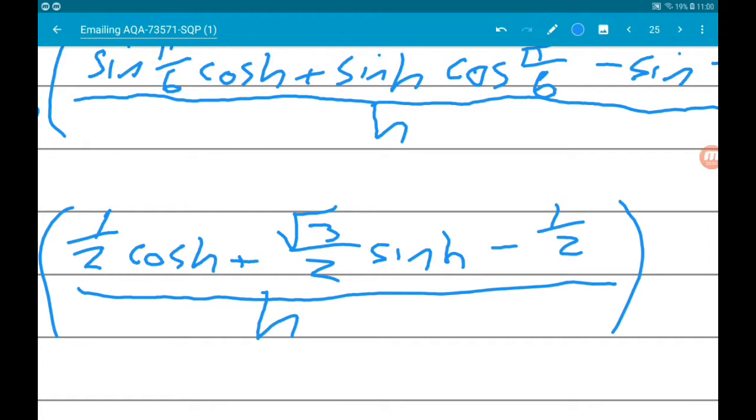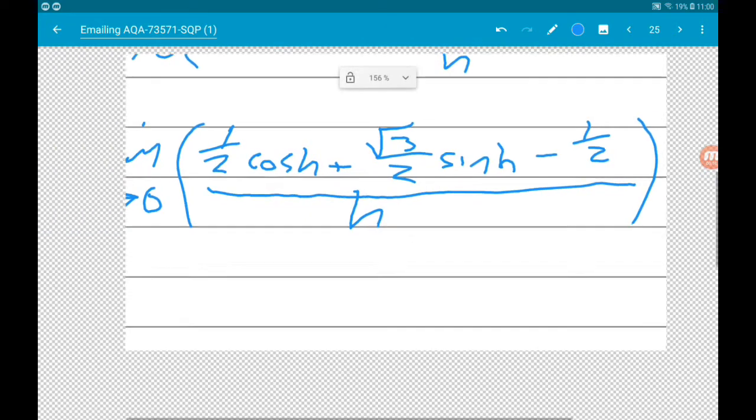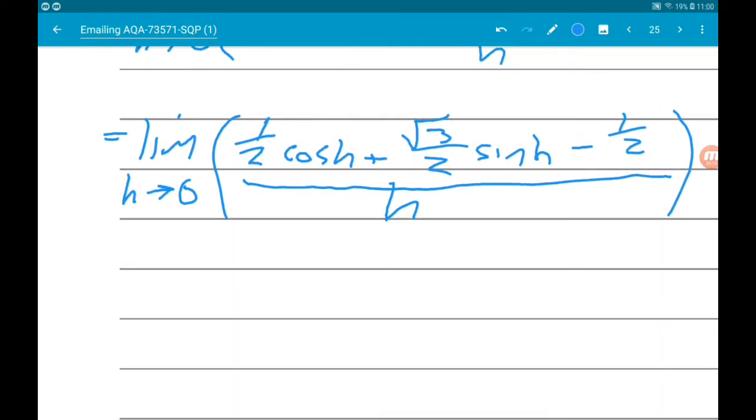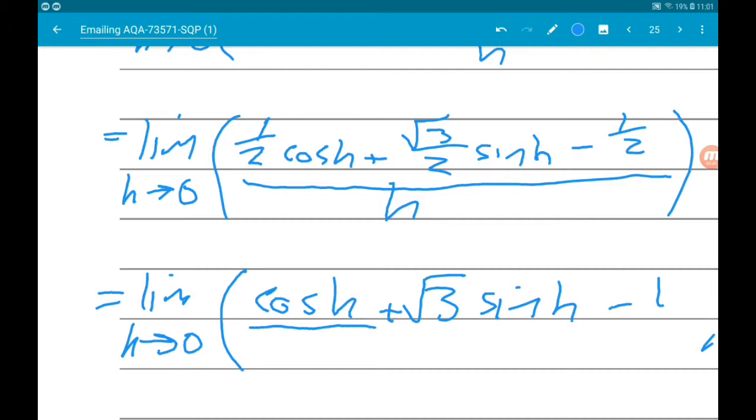Okay, so at this point everything on top has a common factor of one half. So what we can now do is write this as the limit as h tends to zero of cos h plus root three sine h minus one, all over two h.